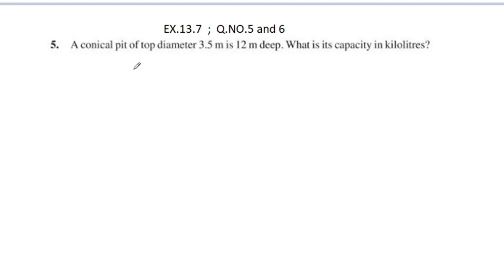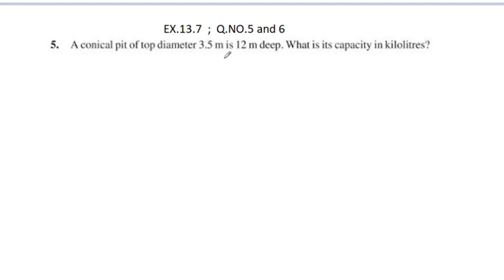A conical pit of top diameter 3.5 meters is 12 meters deep. What is its capacity in kiloliters? The diameter of the top is 3.5 meters and the depth is 12 meters.